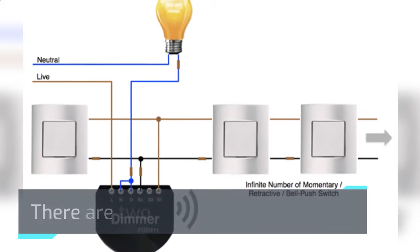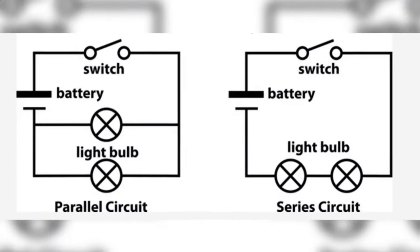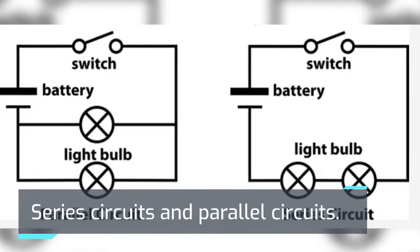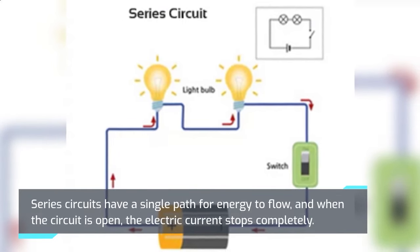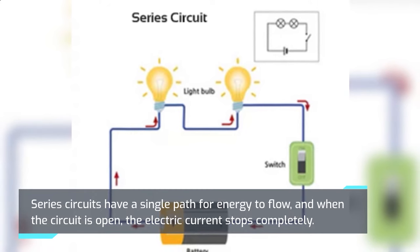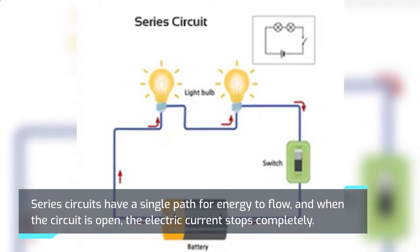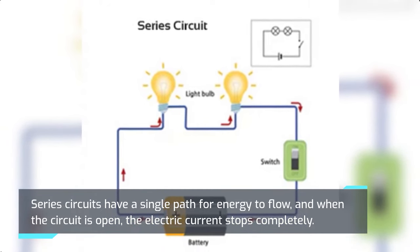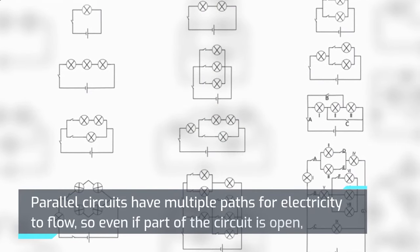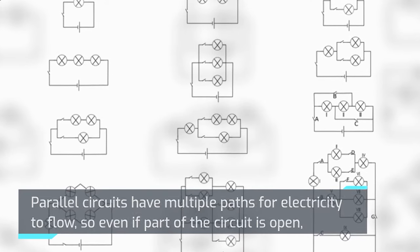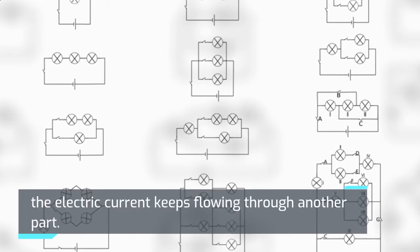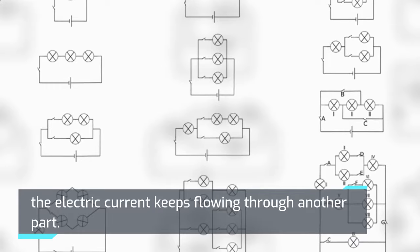There are two main types of circuits: series circuits and parallel circuits. Series circuits have a single path for energy to flow, and when the circuit is open, the electric current stops completely. Parallel circuits have multiple paths for electricity to flow, so even if part of the circuit is open, the electric current keeps flowing through another part.